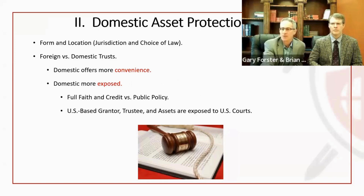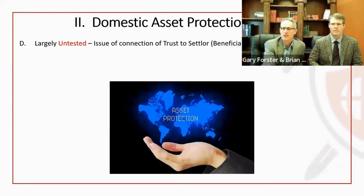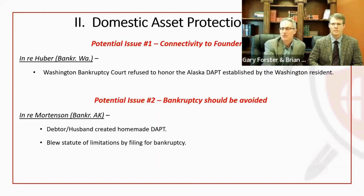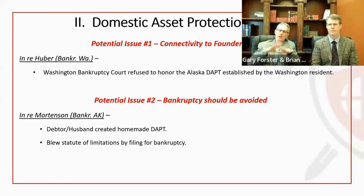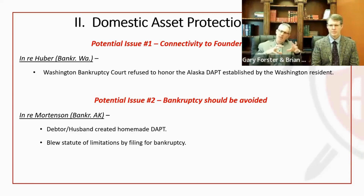For self-settled trusts, 20 states allow them and they are largely untested. The Huber case sets out the idea that you don't want to set up a self-settled trust in a state where you live that doesn't have one. We do a lot of Nevada — clients set up in Nevada, buy property there, use a Nevada trustee. We want to create actual contacts to that state in case a court takes an adverse Huber-style approach. Huber was a bankruptcy case, so civil court outcomes remain uncertain.